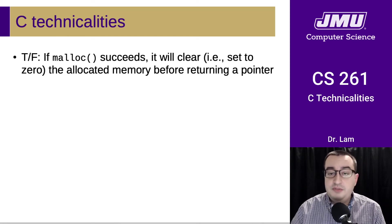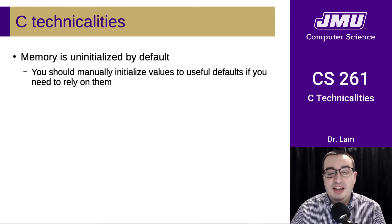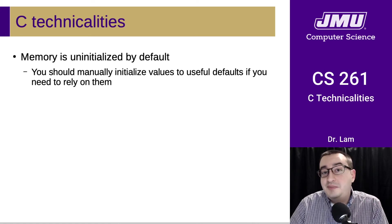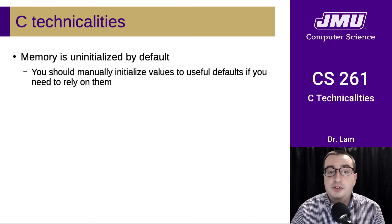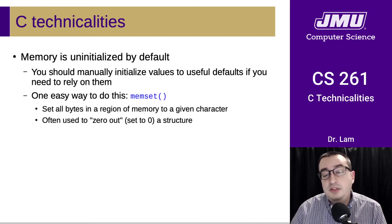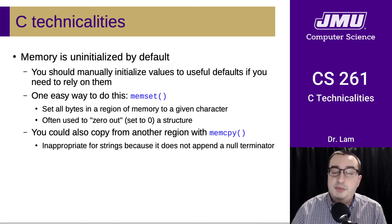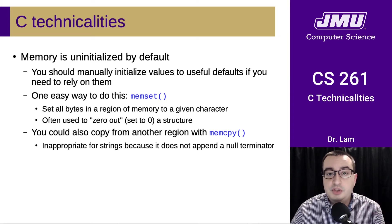True or false: if malloc succeeds and gives you a valid pointer, it will clear or set to zero the allocated memory before returning the pointer. This is not true. Memory is uninitialized by default — it's going to contain whatever data was already in the memory allocated for you. Some runtime systems will zero out the memory, but you should not rely on that. You should manually initialize values to useful defaults if you need to rely on them. One easy way to do this is with memset, which sets all bytes in a given region to a particular character value. You could also copy from another region with memcpy — but don't use this for strings because it doesn't append a null terminator, or if you do, make sure you get the null terminator as well.